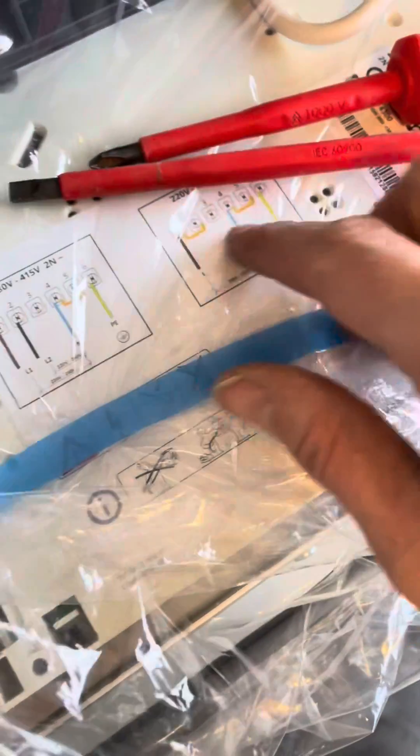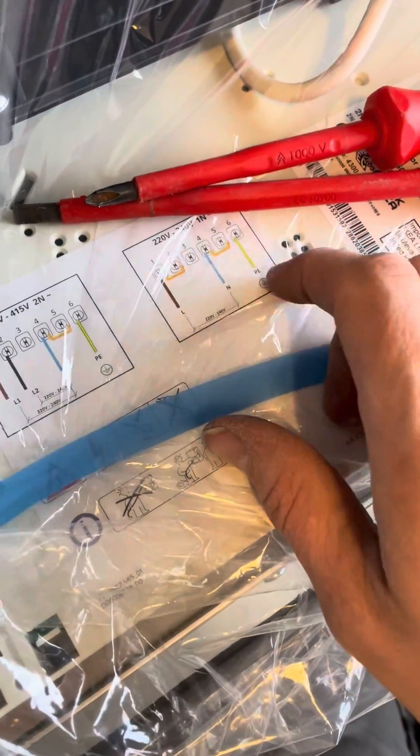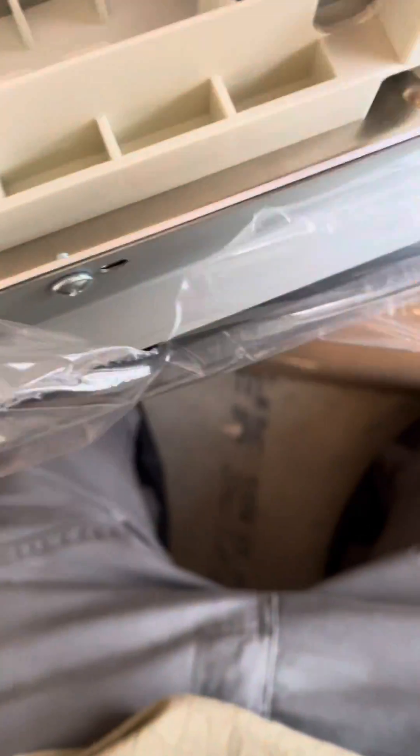This one we've got, it'll be this diagram we're working to. So line neutral and earth, but the links which I can see down there. So I've got a couple of them, put them between one and two and four and five.